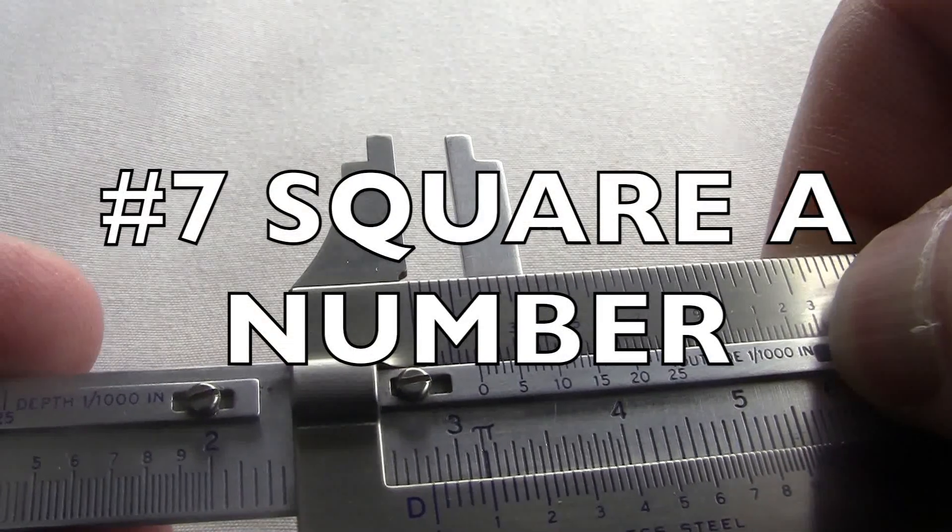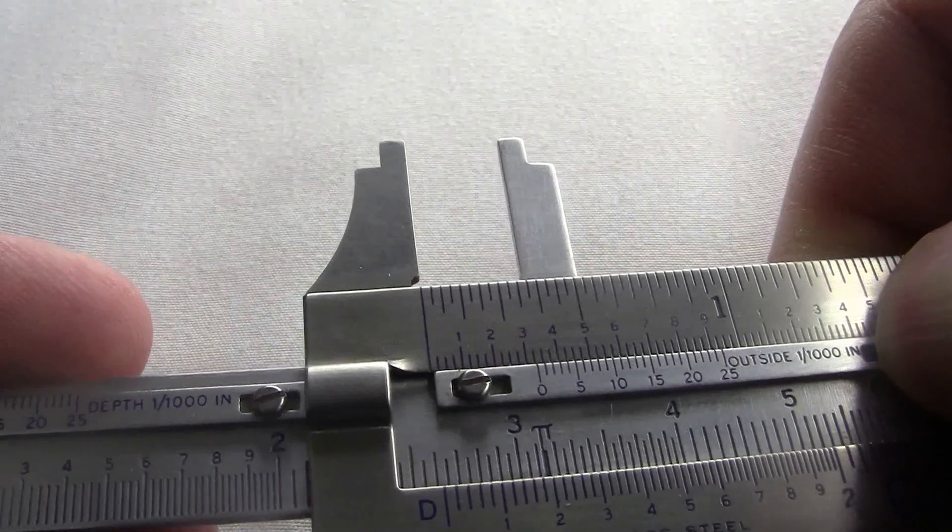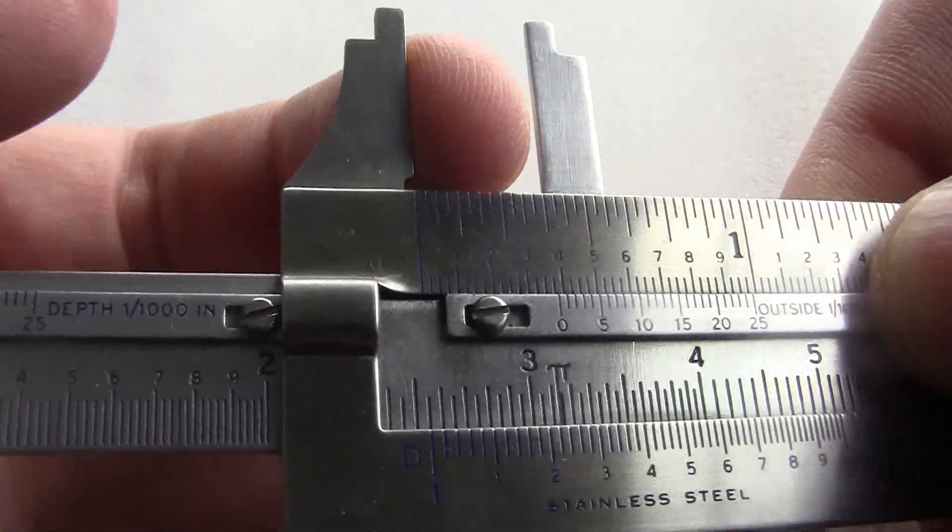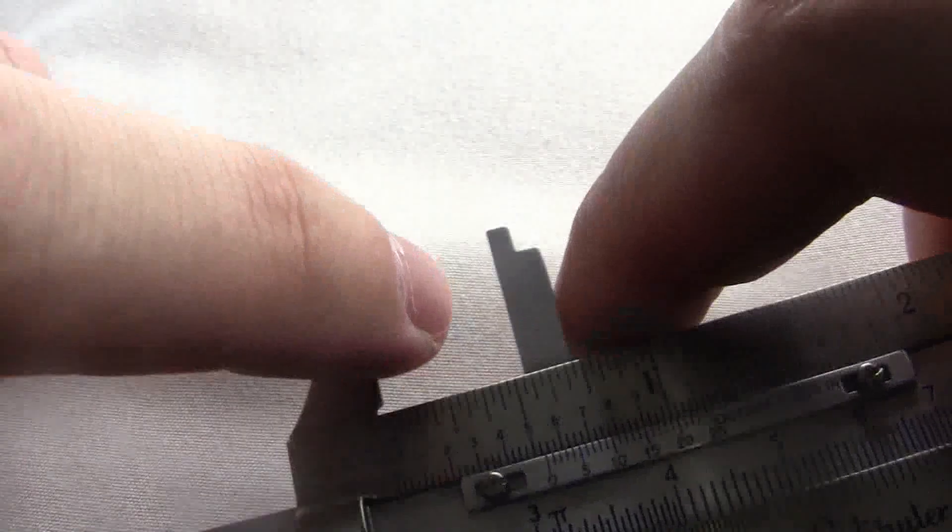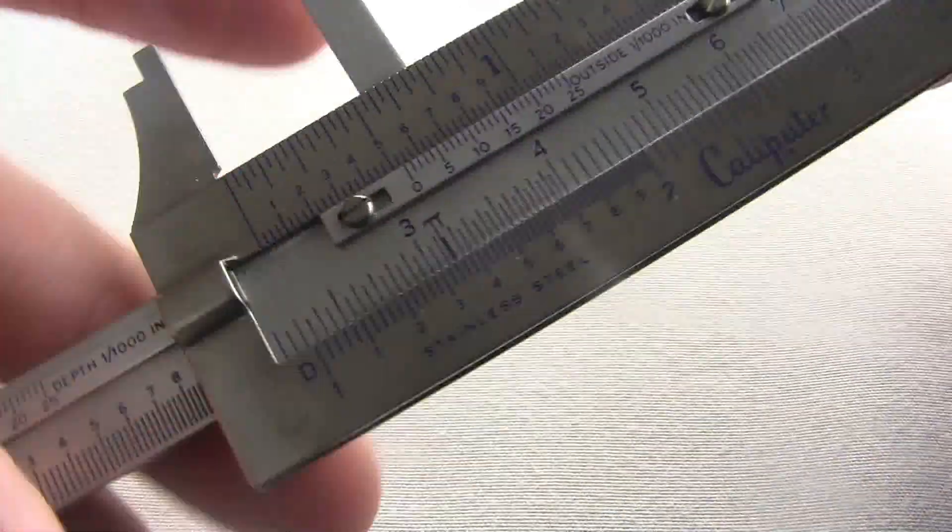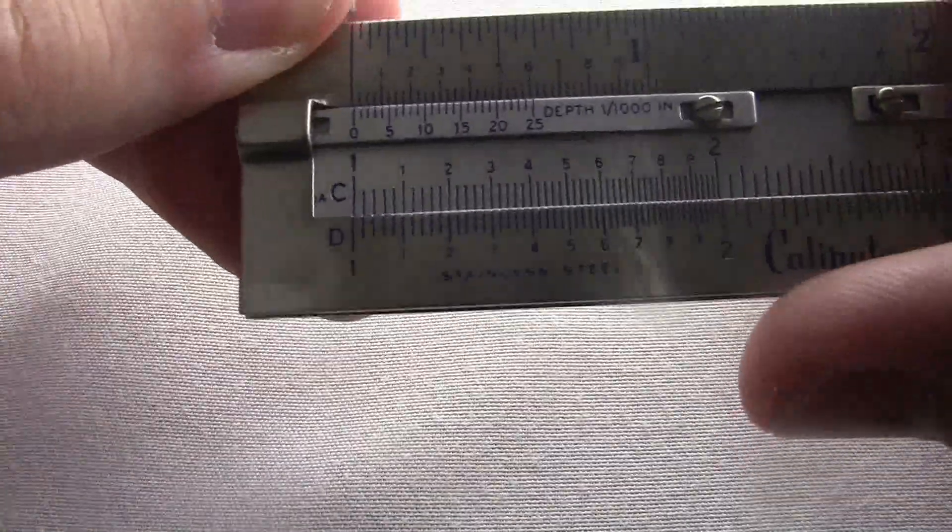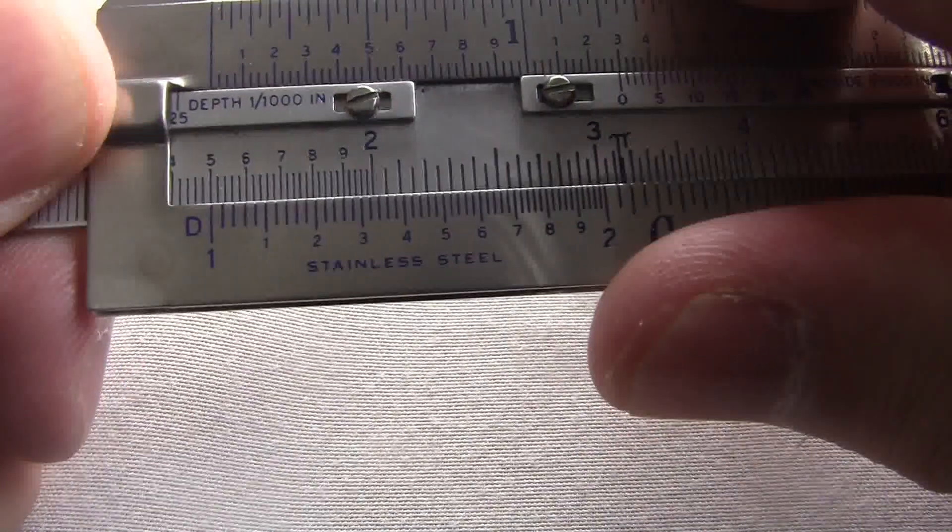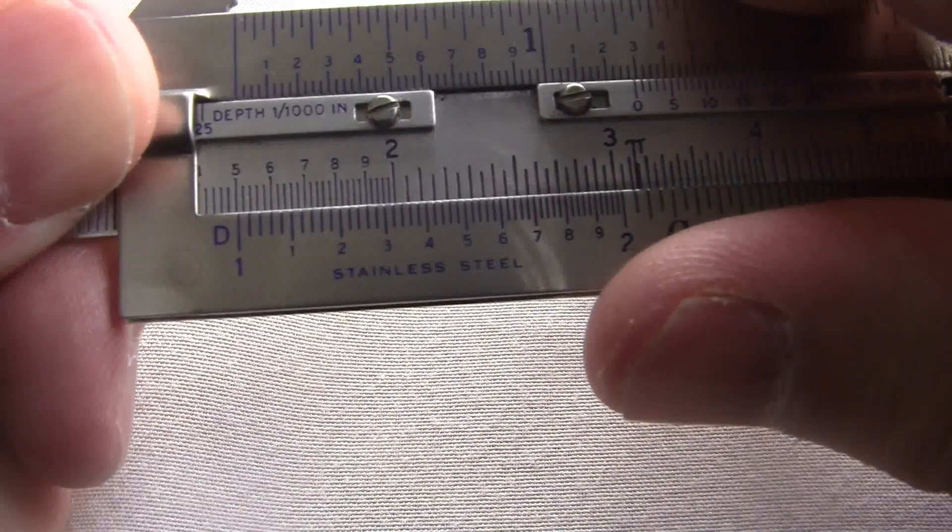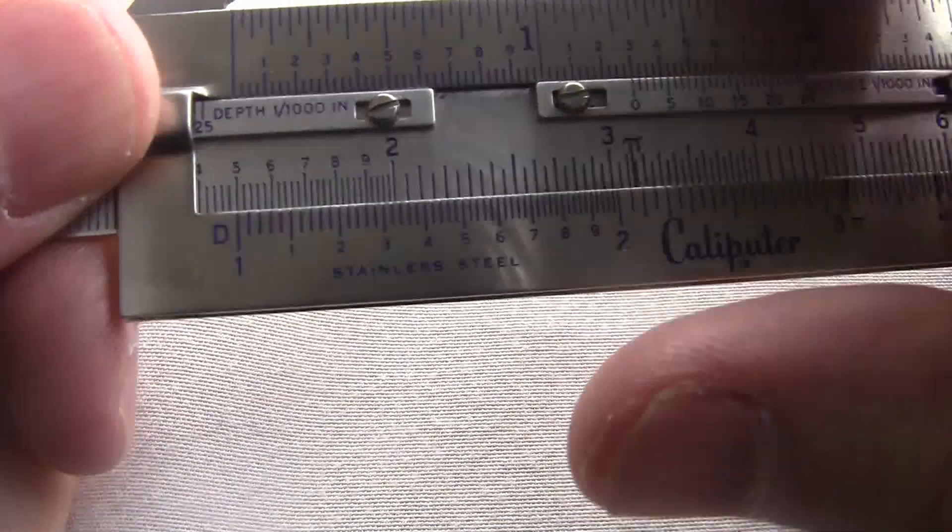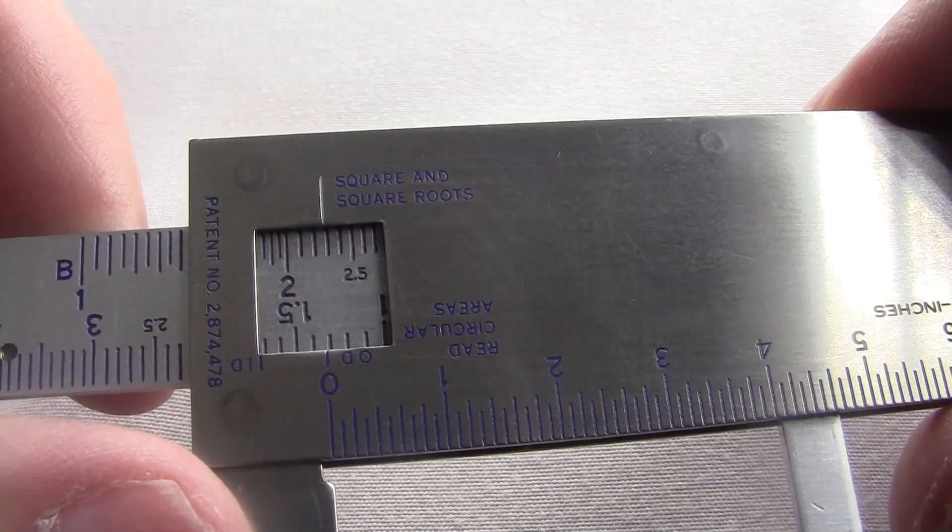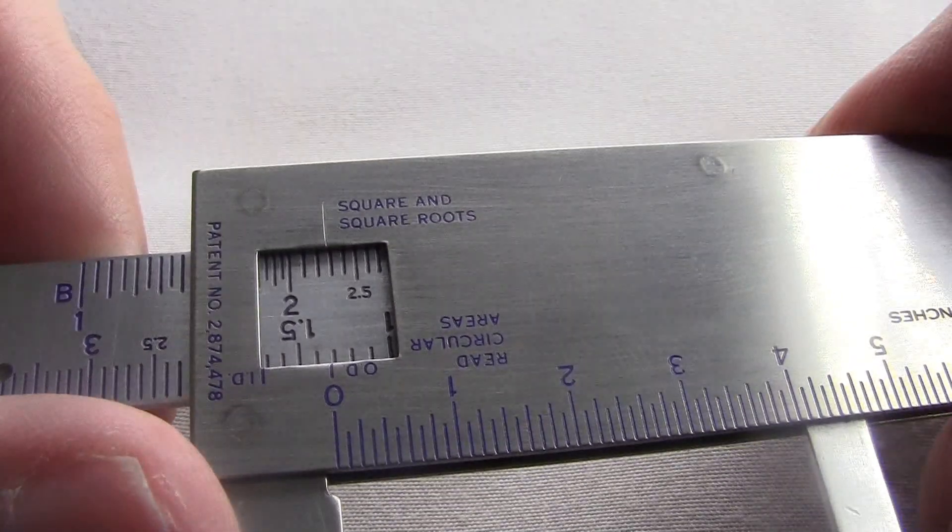Number seven, square a number. Now you can always square a number on a slide rule by just multiplying by itself. But actually there's a special scale on the back of the caliputre for squaring a number. Let's say I want to do 1.5 squared, which would be 2.25. You slide to the number you want to square on the slide rule part on the C scale. And then you turn it around and read the answer in the squaring window on the back. And it looks pretty close to 2.25.